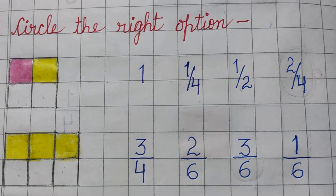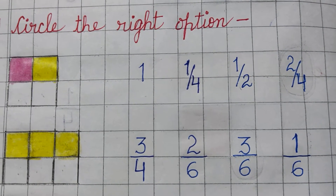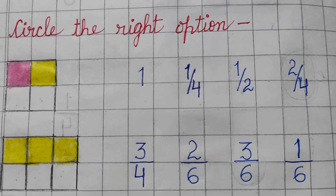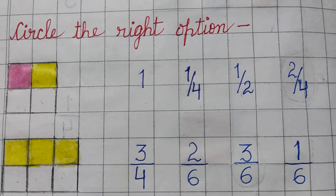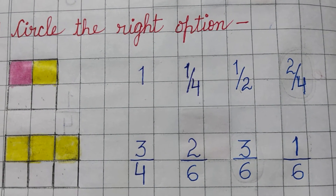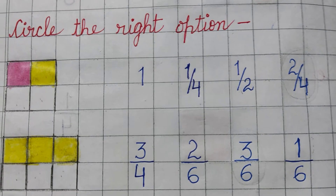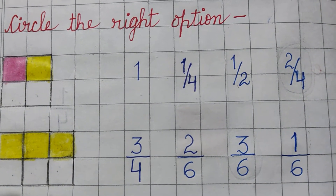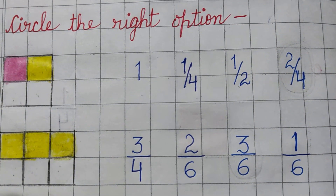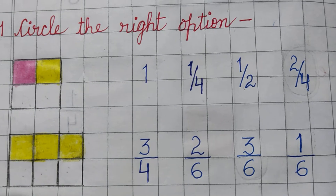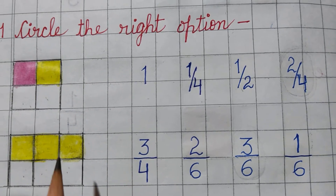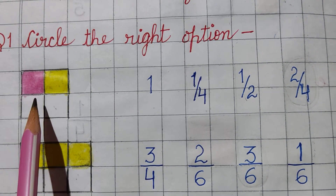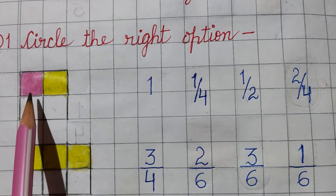First of all, I want to tell you: the total parts are written as the denominator — denominator means the below part. And the parts that are shaded will be written on the top, which is called the numerator. Okay, let's start doing the first part.